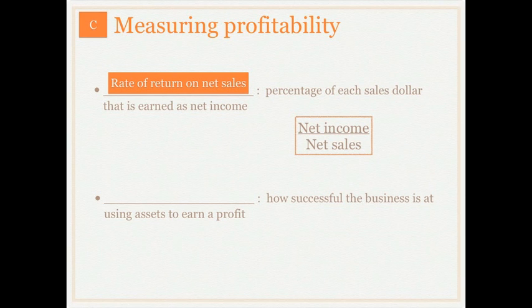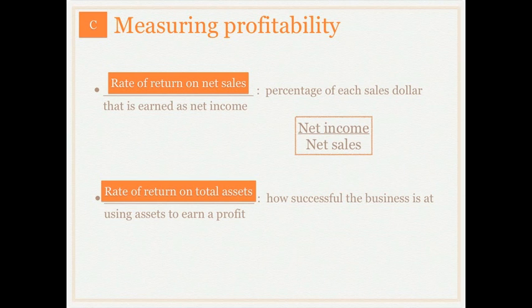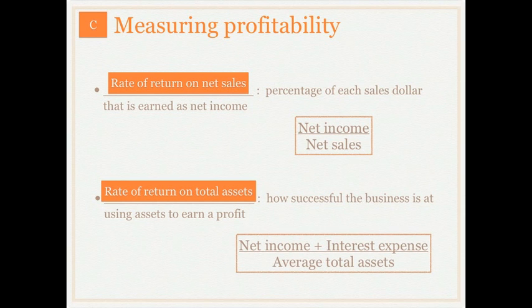The second ratio we will look at is the rate of return on total assets — how successful the business is at actually using its assets to earn a profit. This equation is net income plus interest expense divided by average total assets.